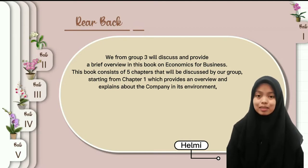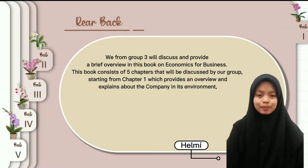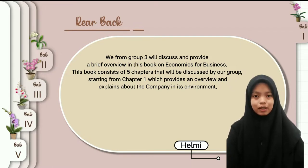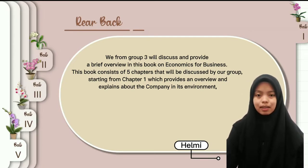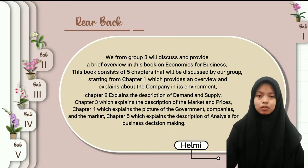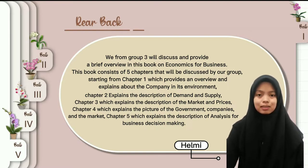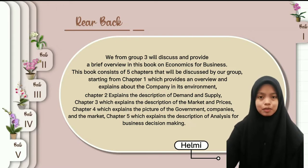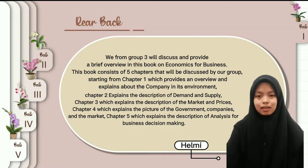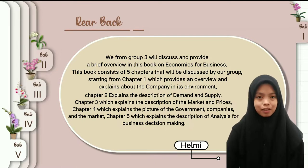This book consists of 5 chapters, starting from chapter 1, which provides and explains about companies in their environment. Chapter 2 explains demand and supply. Chapter 3 explains the description of market and prices. Chapter 4 explains the picture of government, companies, and market.